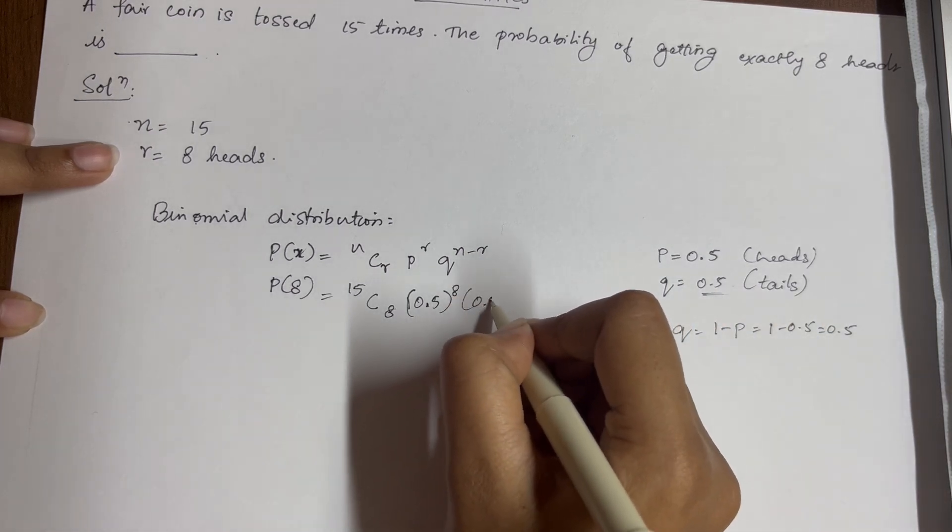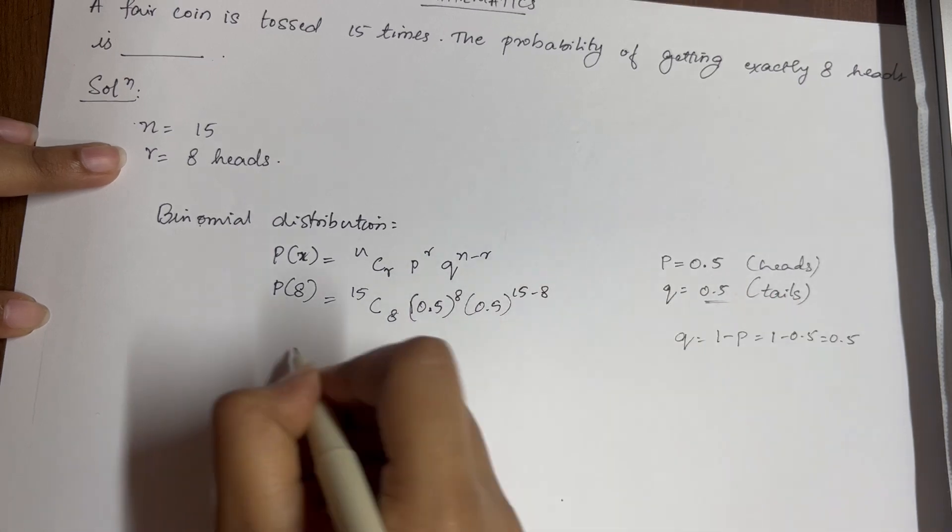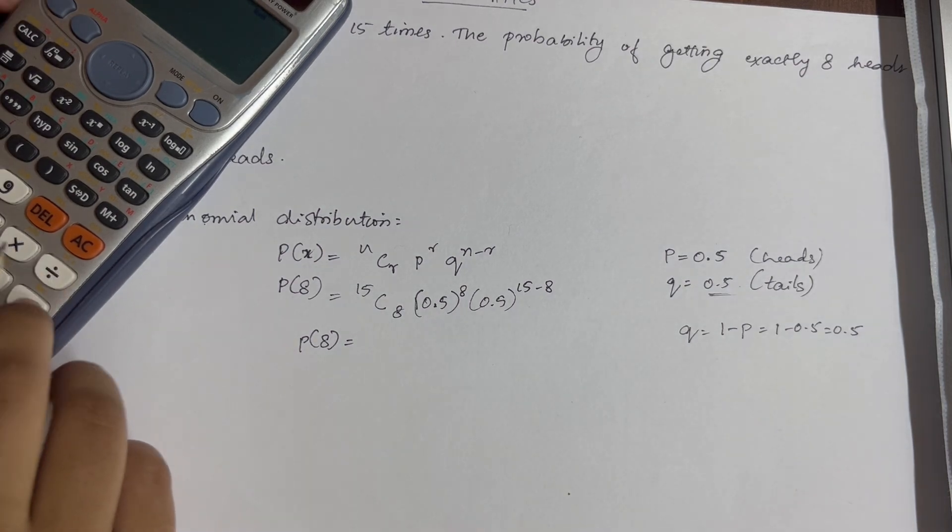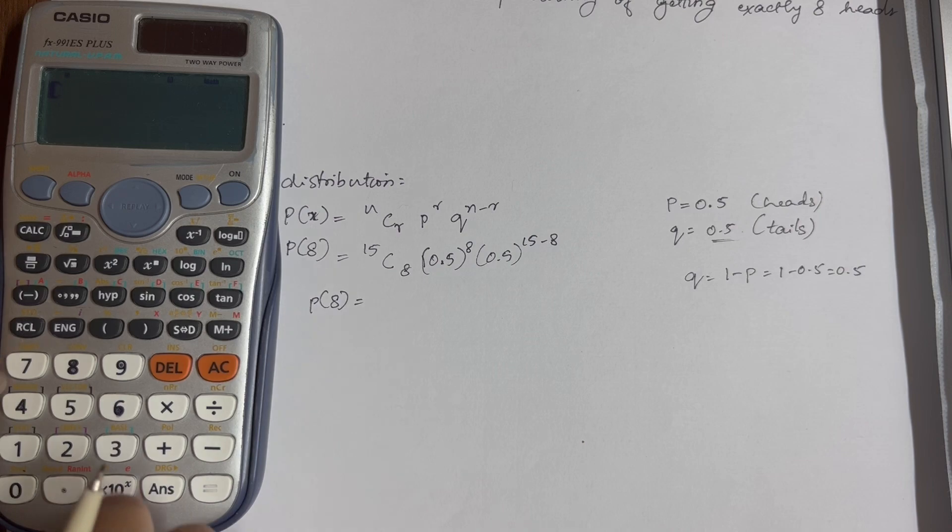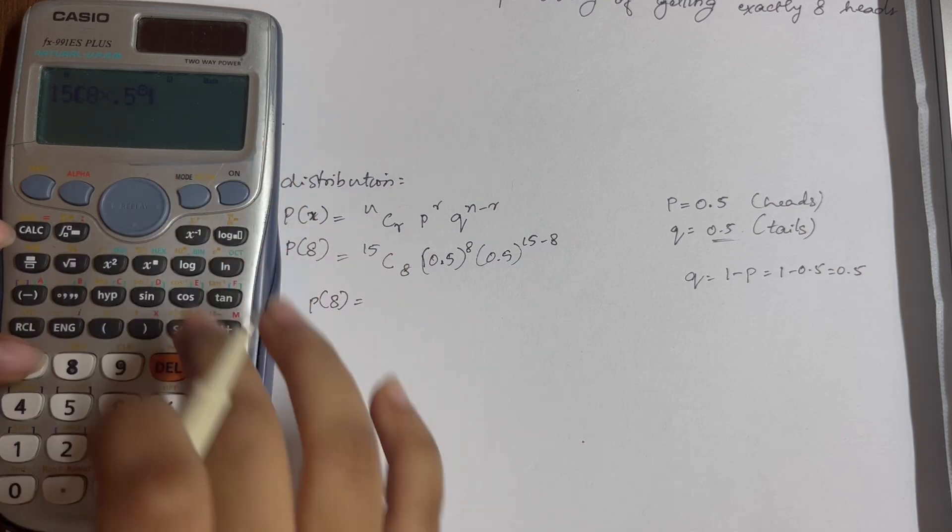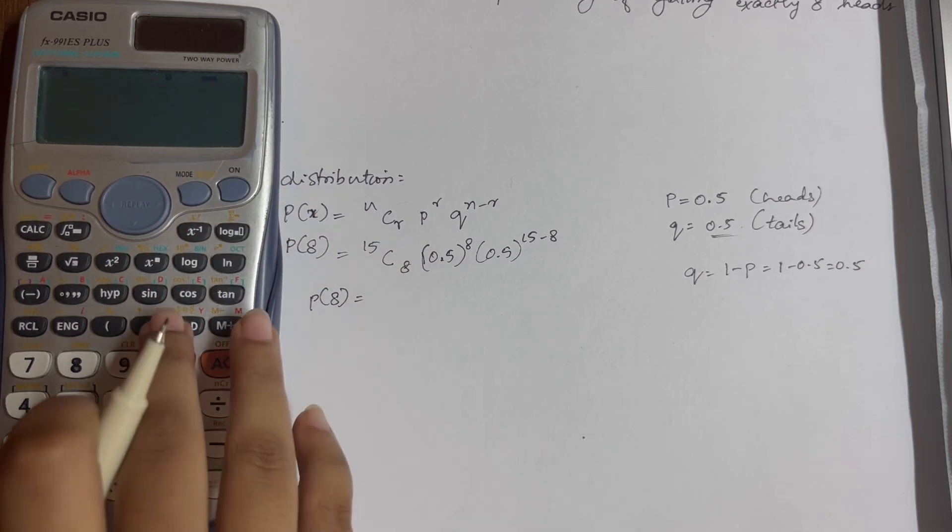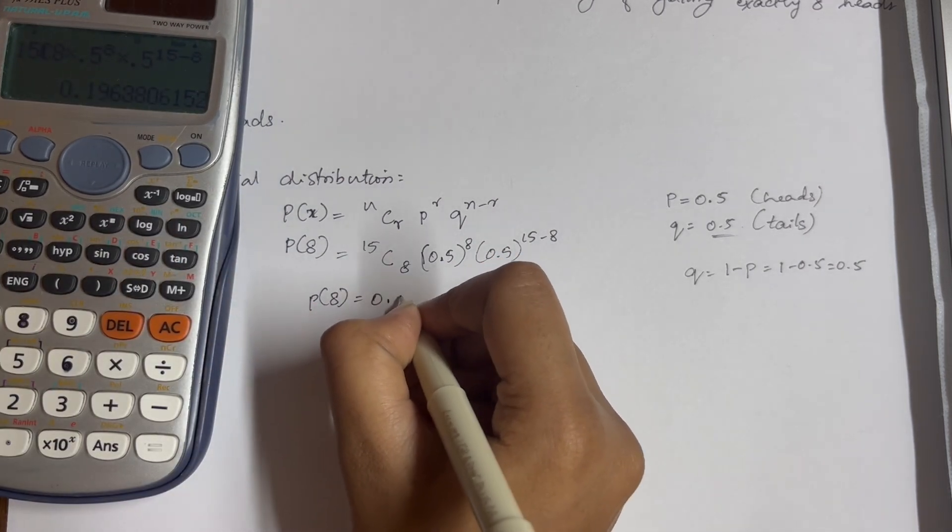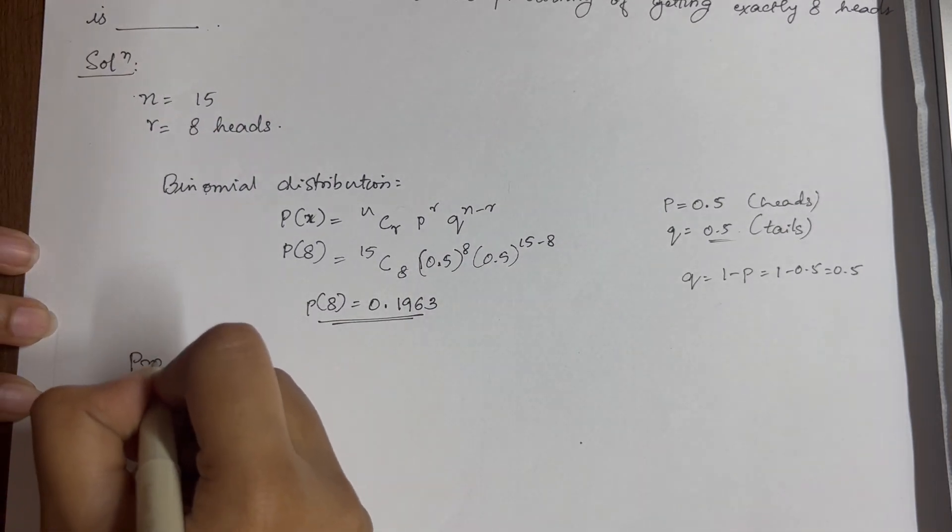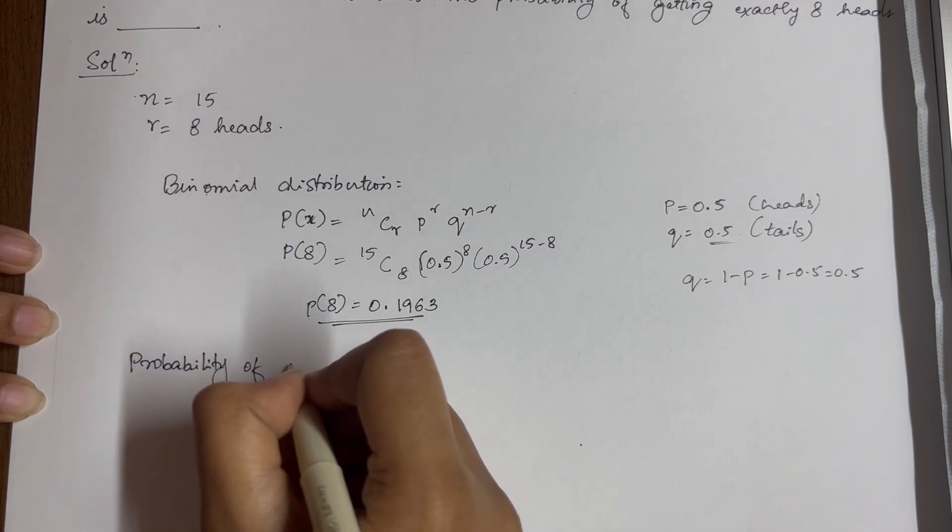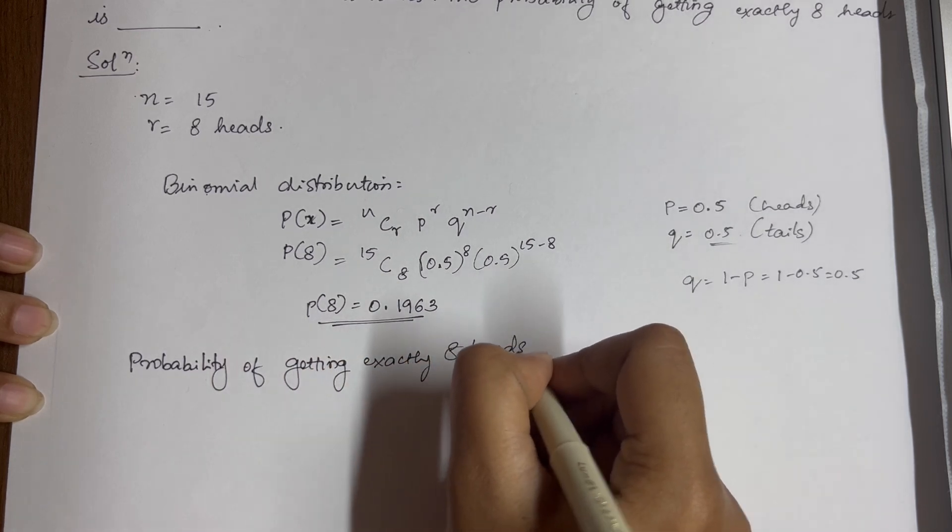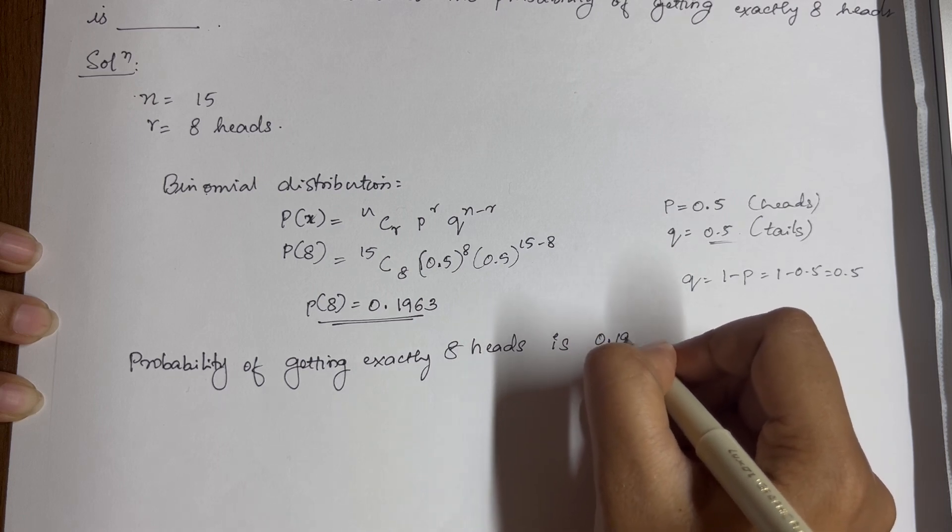So 0.5 power n is 15 minus 8. P of 8 will be 0.1963. So probability of getting exactly 8 heads is 0.1968.